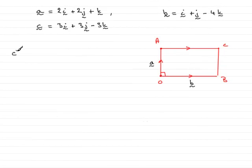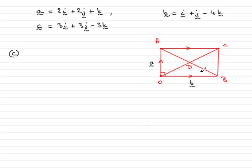Now in part C, we're asked to find the point where the diagonals of the rectangle ACB intersect, and that's called the point D. So in other words, we've got to find the position vector OD. So how do we do that?